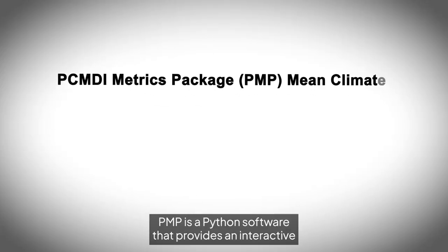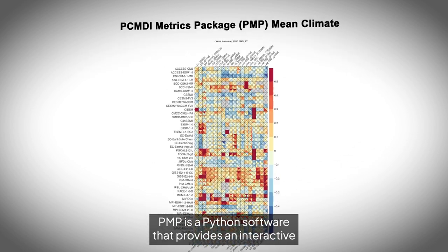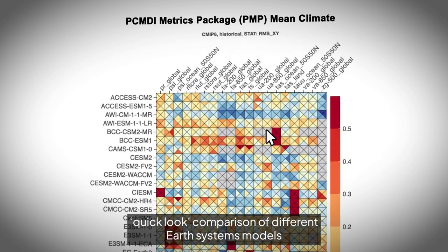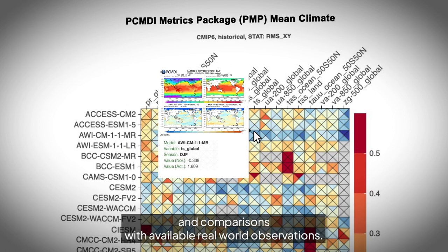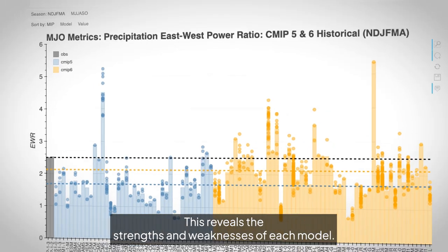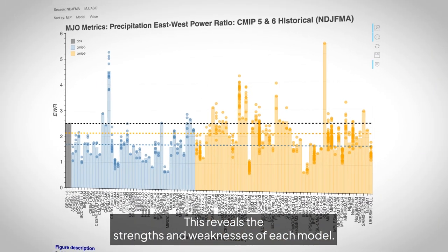PMP is a Python software that provides an interactive, quick-look comparison of different Earth system models and comparisons with available real-world observations. This reveals the strengths and weaknesses of each model.